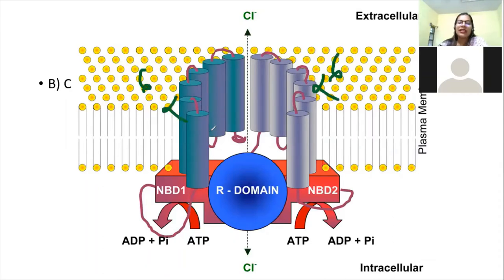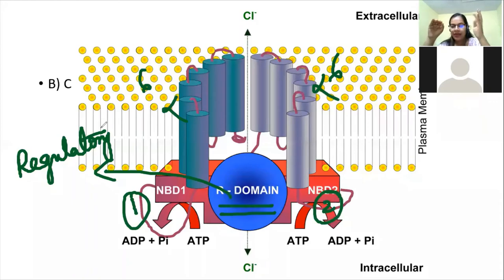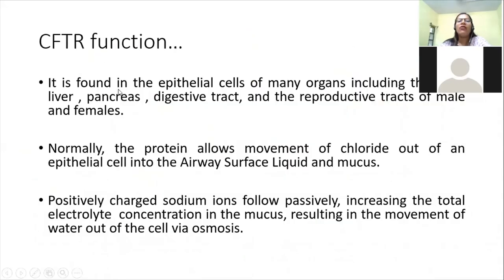When ATP binds to the NBD domain, the regulatory domain undergoes a conformational change that opens the chloride channel, allowing chloride ions to pass. CFTR is found in epithelial cells of many organs including the liver, pancreas, digestive tract, and reproductive tracts. Wherever there is a mucus lining, there you find CFTR.